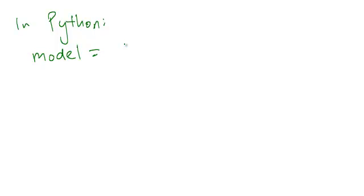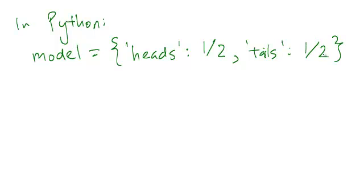We can write model equals, first the string heads, which we assign the value of one-half, and then the string tails, which we also assign the value of one-half.